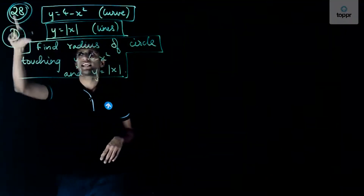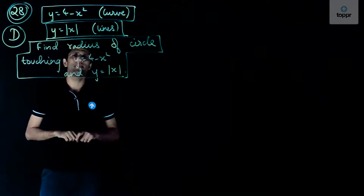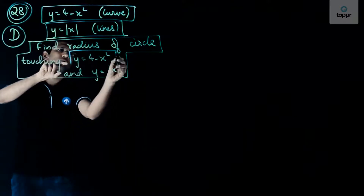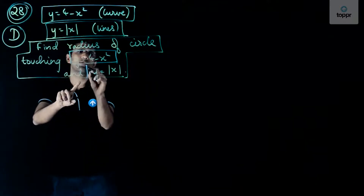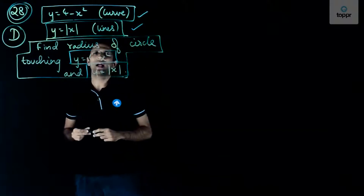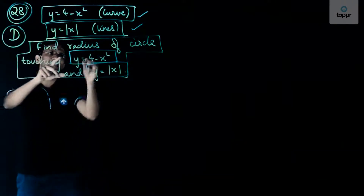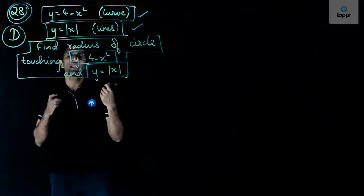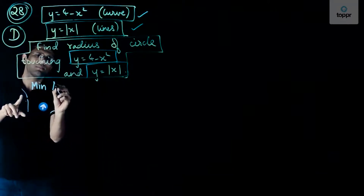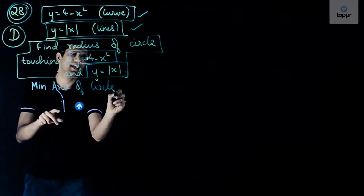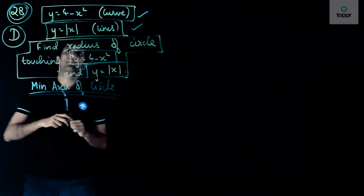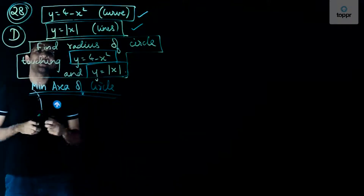We are looking at question number 28 of Set D of the IIT JEE Main 2017 paper. We have to find the radius of the circle touching the curve y = 4 − x² and the lines y = |x|. The condition is minimum area of the circle, in addition to the constraint that these two curves and the lines are tangents to the circle.